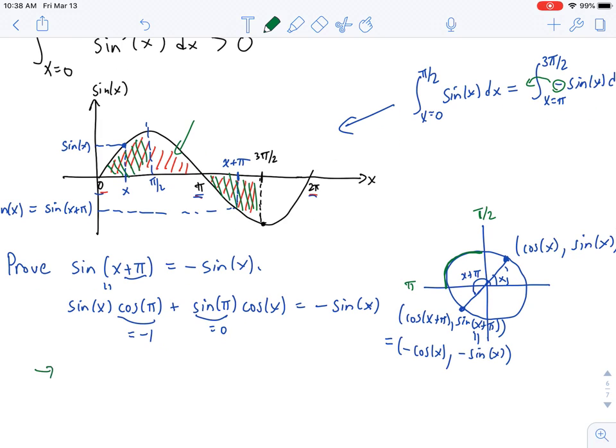So from here, I could argue that if I integrated from 0 to 3π over 2 sine of x dx, that this would be a positive value.